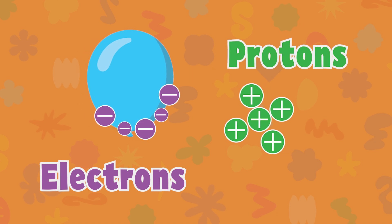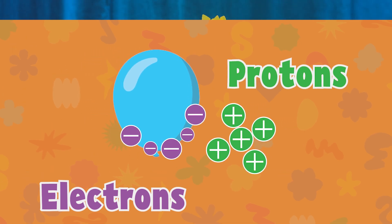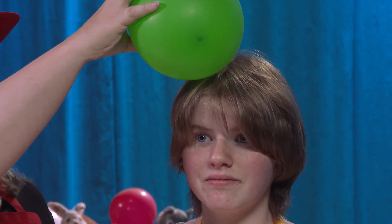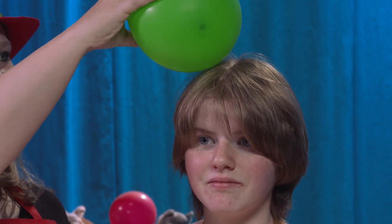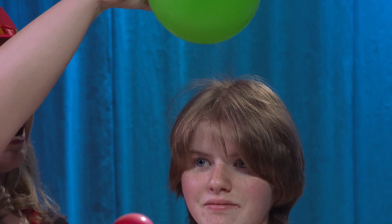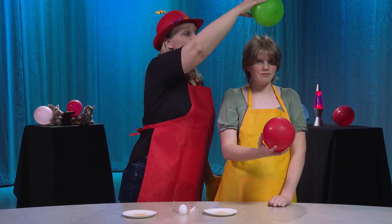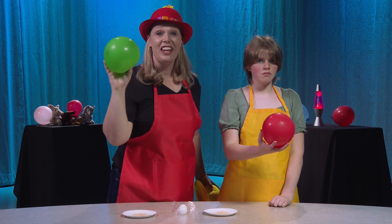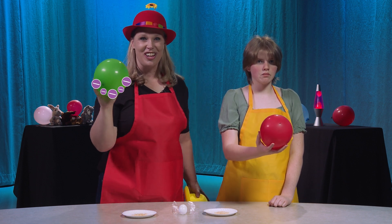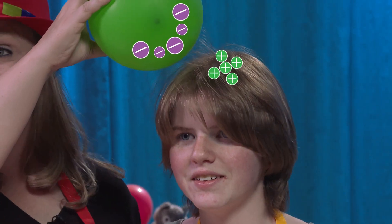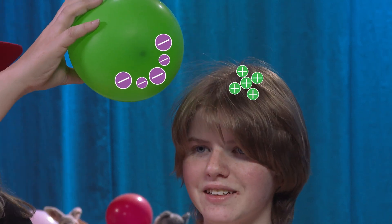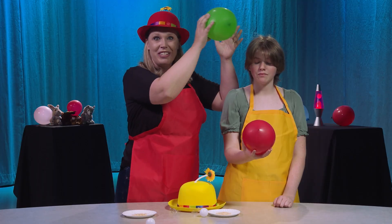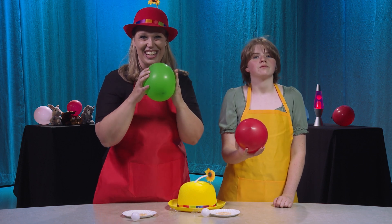So when we rub this on our shirt, it's picking up a lot of negatives. When I hold it next to Michaela's hair, her hair stands on end. That is because opposites attract. The balloon has a lot of negatives because we picked up extras, and her hair is positively charged. So her hair wants to stick to the balloon — opposites attract, wanna come together.